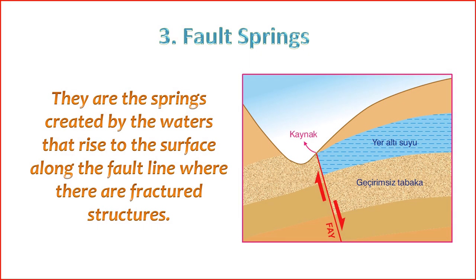Fault springs, also known as fault-related springs, are a type of spring that originates due to the movement or displacement along a fault line in the earth's crust. Faults are fractures or zones of weakness in the earth's crust where blocks of rock on either side have moved relative to each other. When water-bearing rocks are intersected by such faults, springs can emerge. 1. Formation — fault springs occur when water flows along a fault line and emerges at the surface due to the movement or displacement of rocks. The water follows the path created by the fault, and when it reaches the surface, it forms a spring.